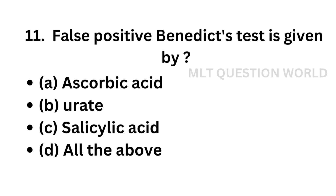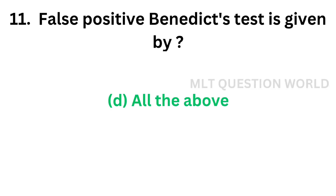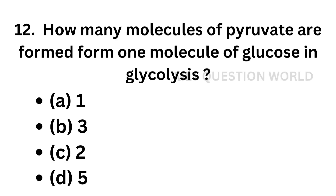Question number 11. False positive Benedict's test is given by: option A, Ascorbic acid; option B, Uric acid; option C, Salicylic acid; option D, All of the above. Benedict's test is done for sugar, and false positive results will be given by all of the following. The correct answer is option D, All of the above. Ascorbic acid, salicylic acid, and uric acid will give false positive Benedict's test.